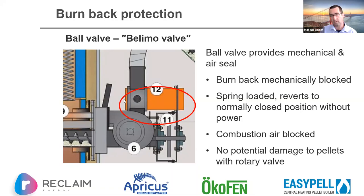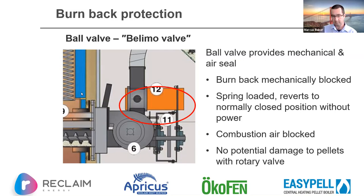With Ökofen it's a ball valve with a normally-closed spring-loaded motor. When the boiler wants fuel it activates the motor, drawing the ball valve open so pellets drop into the auger system, then it closes.